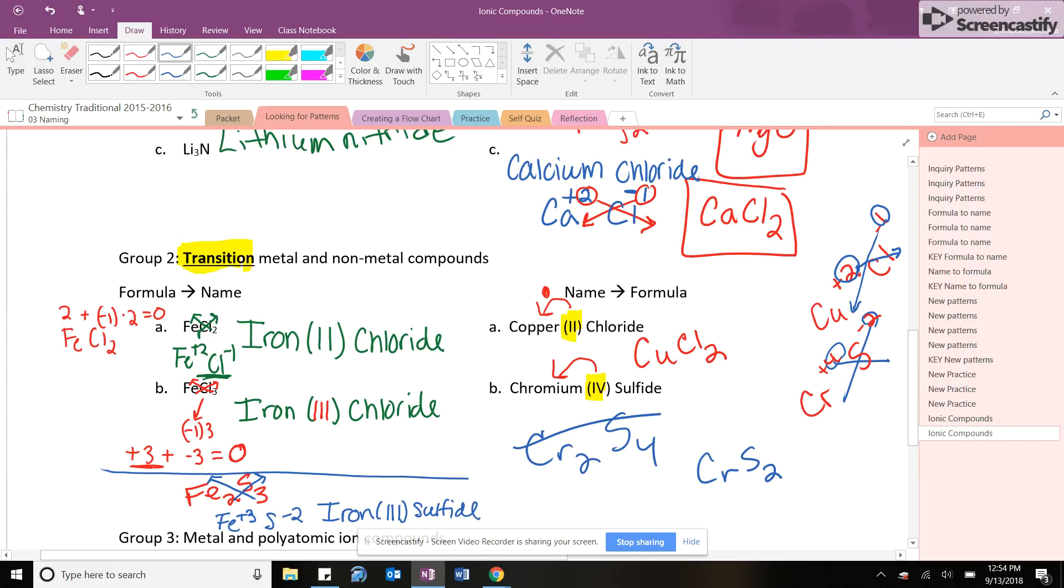Okay. So math wise, if I have three sulfurs each with a minus two, that's a minus two, minus two, minus two, which means it's a minus six. Therefore, my iron has to be a plus six, but because I have two of them, that plus six has to be divided by two to give me three. All right. We good. We're good. Awesome. All right. Tune in next time.